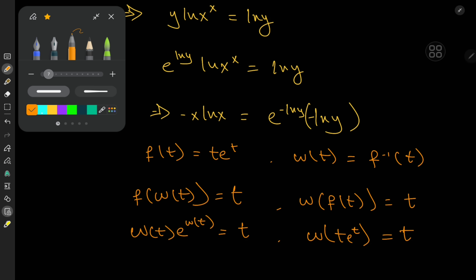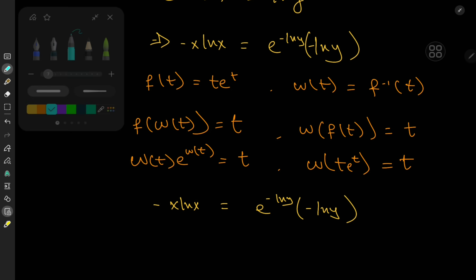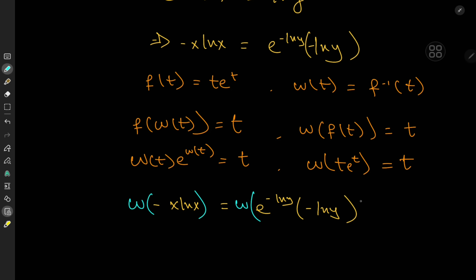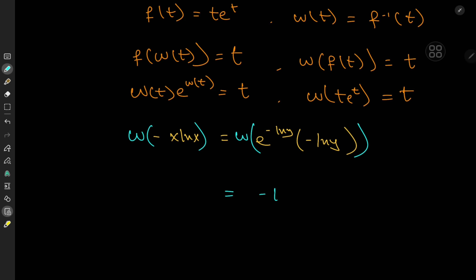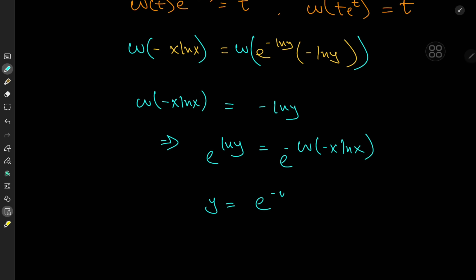What form seems more applicable here? We have −x·log(x) = e^(−log y)·(−log y), so it is useful to apply the Lambert W function. Applying W to both sides gives us −log y = W(−x·log x), which implies log y = −W(−x·log x). Exponentiating to recover y, we get y = e^(−W(−x·log x)).